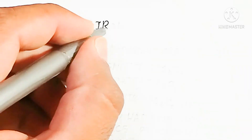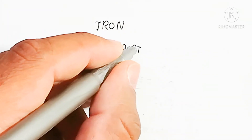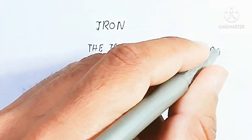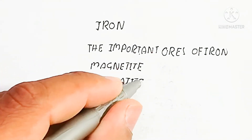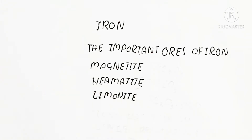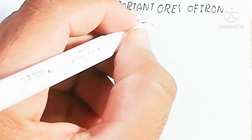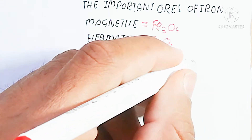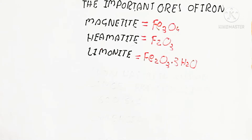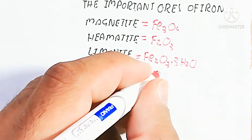Here we will discuss the introduction of iron. Iron is taken from the earth in the form of iron ores. The important ores of iron are magnetite, which is made up of iron and oxygen; hematite, which also contains oxidized iron with oxygen; and limonite, which has water molecules attached with iron. Their chemical formulas are: magnetite (Fe3O4), hematite (Fe2O3), and limonite (Fe2O3·H2O).